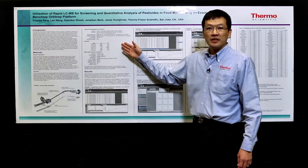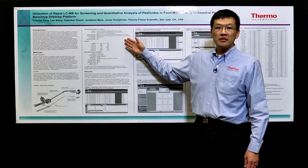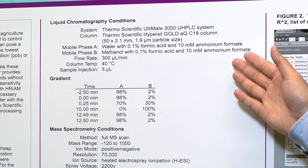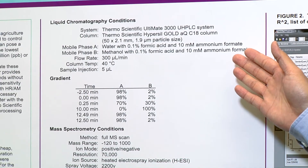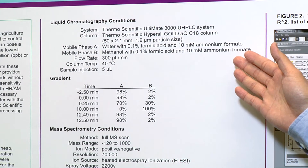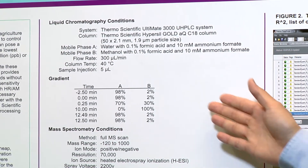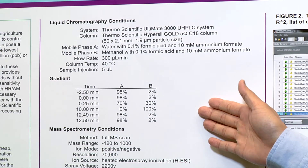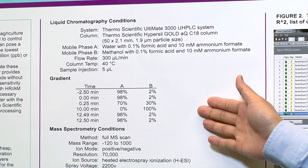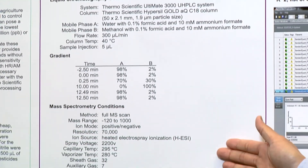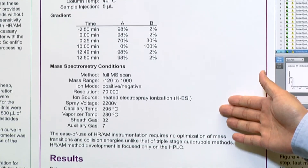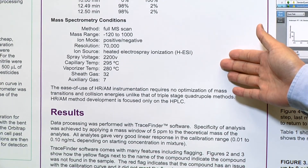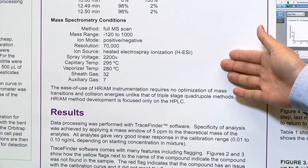Over here we have the LC conditions for the instrumentation run. It is a very simple method where we screen a lot of compounds at one time. The gradient run time is about 12 minutes, and the mass spec conditions are very simple to use. The scanning range is from 120 to 1000 mass range.